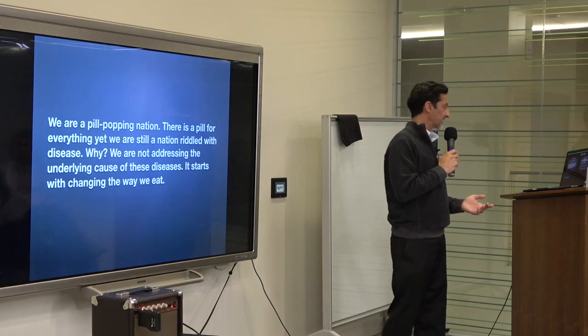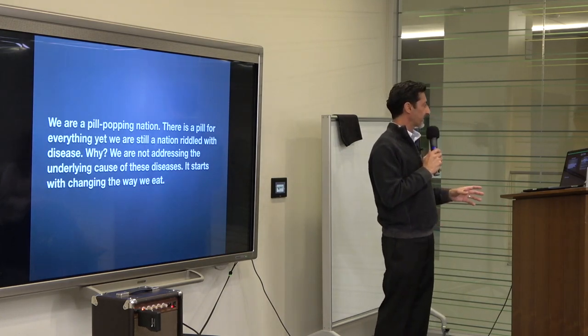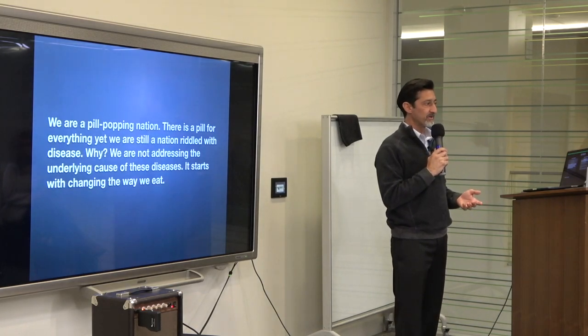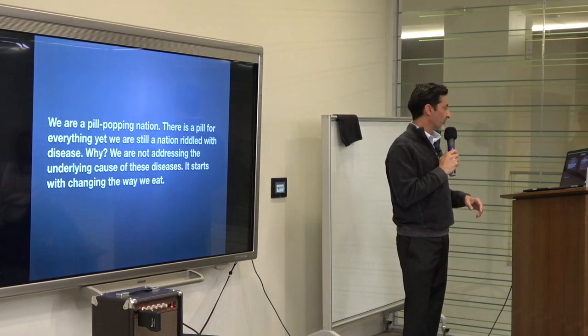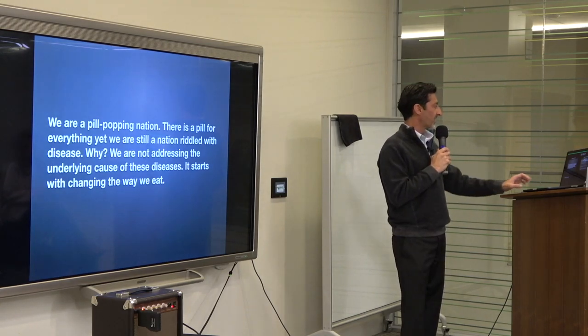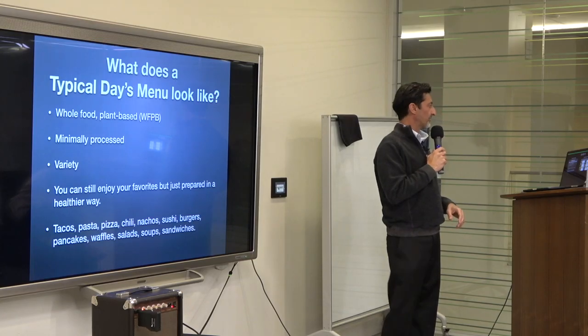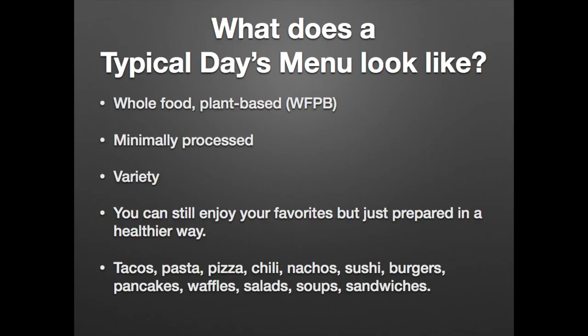We are a pill-popping nation. There's a pill for everything, yet we're still riddled with disease. Disease is getting worse. There's more coronary artery disease than ever. There's more cancer than ever. We're not really addressing the underlying causes of the diseases, and it starts with changing the way we eat. What does a typical day's menu look like? It's whole food, plant-based, minimally processed. You can enjoy a variety of foods. You can still enjoy your favorites, but just prepare it in a healthier way - tacos, pasta, pizza, chili, nachos, burgers, etc.